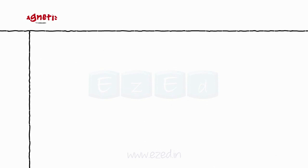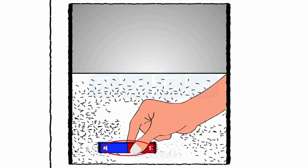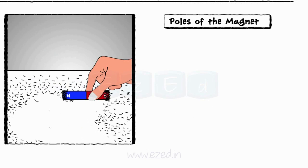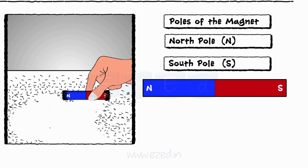When we rotate a magnet around the iron pieces, they get attracted towards the magnet and stick to it at the two ends. These two ends are called as the poles of the magnet, namely the north pole and the south pole. Even if we cut a piece of a magnet into two pieces, every piece again will have its own north and south pole.